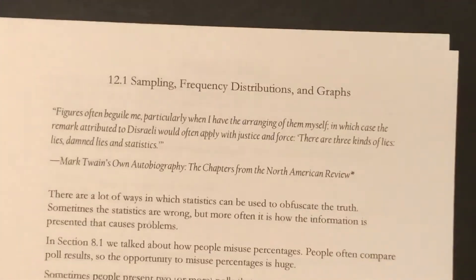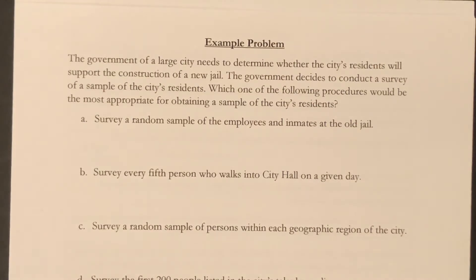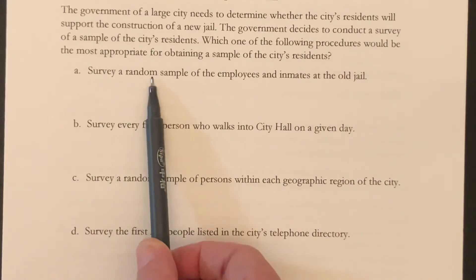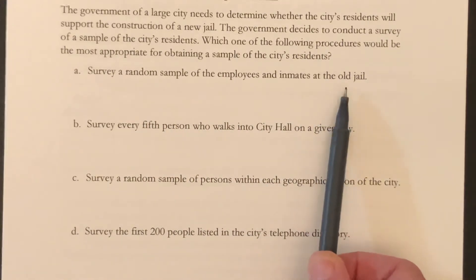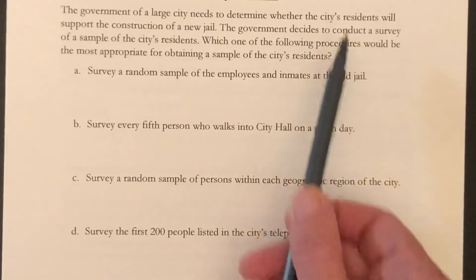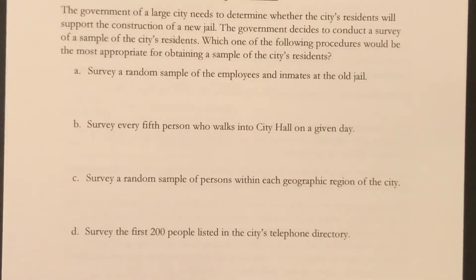Okay, example problem. If you are the government of a large city and you need to determine whether the city's residents will support the creation of a new deal, the government decides to conduct a survey of a sample of the city's residents. Which of the following procedures would be most appropriate for obtaining a sample? Option A: survey a random sample of the employees and inmates at the old jail. Well, we need the whole city represented — not just the people who live and work there — so most of the city would not be eligible. This is not a good random sample of the city.